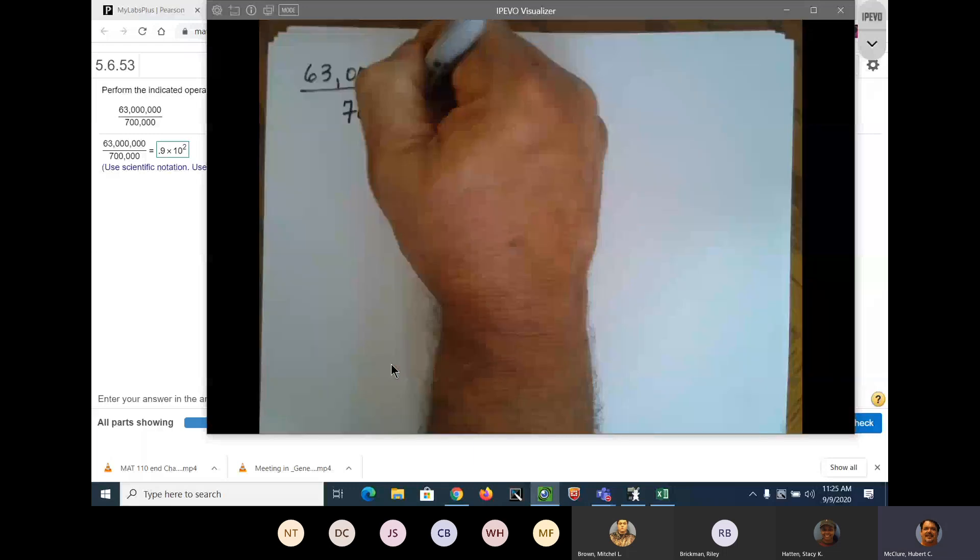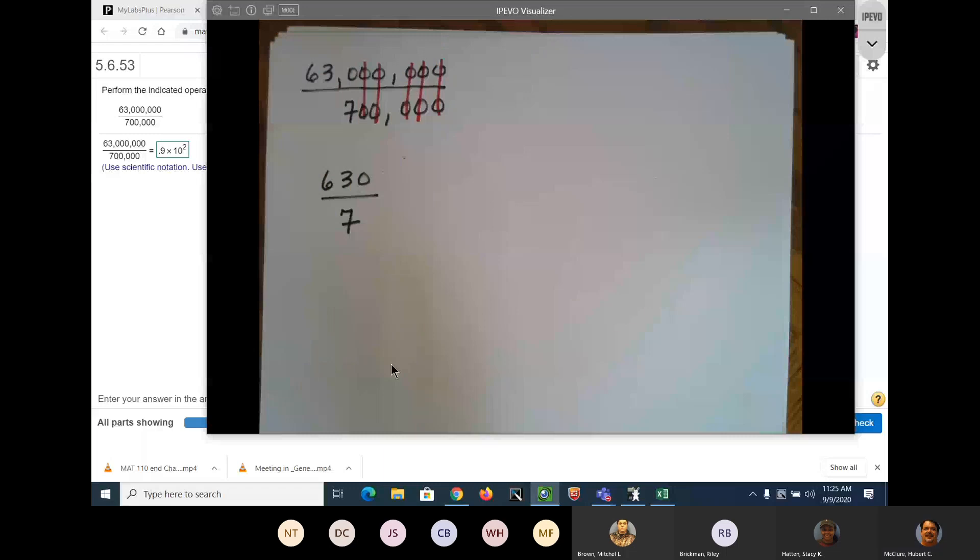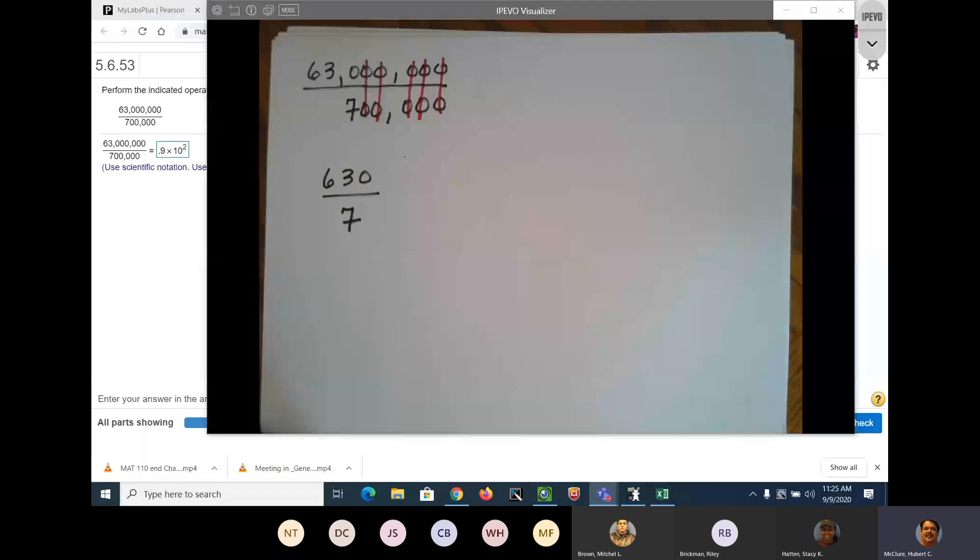Now the non-scientific method is to do 630 divided by 7. How many times will 7 go into 63? Nine times, right? Nine times seven is 63. That would be 90, which would be 9.0 times 10 to the first.